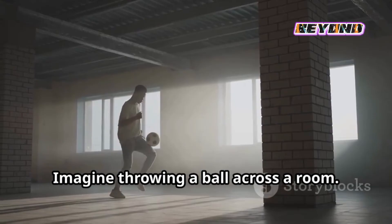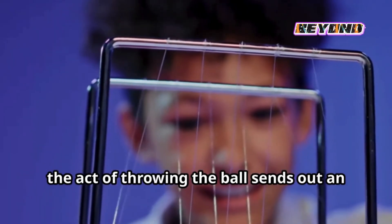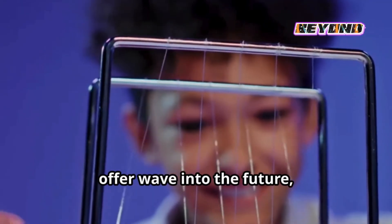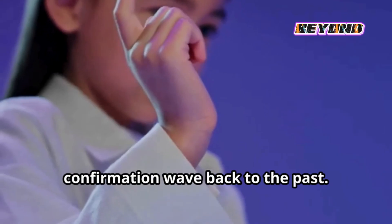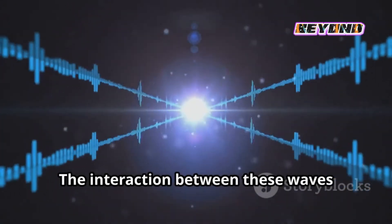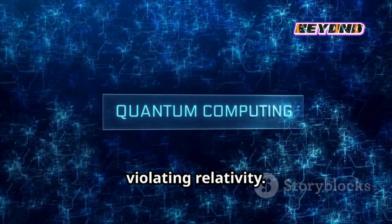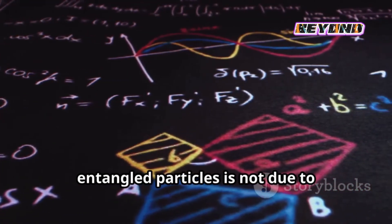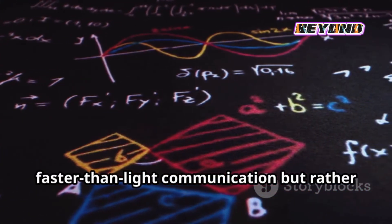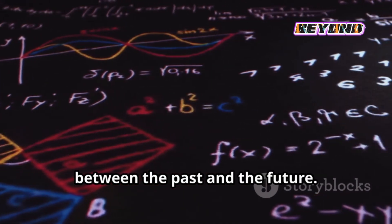Imagine throwing a ball across a room. In the transactional interpretation, the act of throwing the ball sends out an offer wave into the future, and the ball's eventual landing sends a confirmation wave back to the past. The interaction between these waves determines the ball's trajectory. This interpretation offers a way to understand quantum entanglement without violating relativity. The instantaneous correlation between entangled particles is not due to faster-than-light communication but rather a result of this pre-arranged handshake between the past and the future.